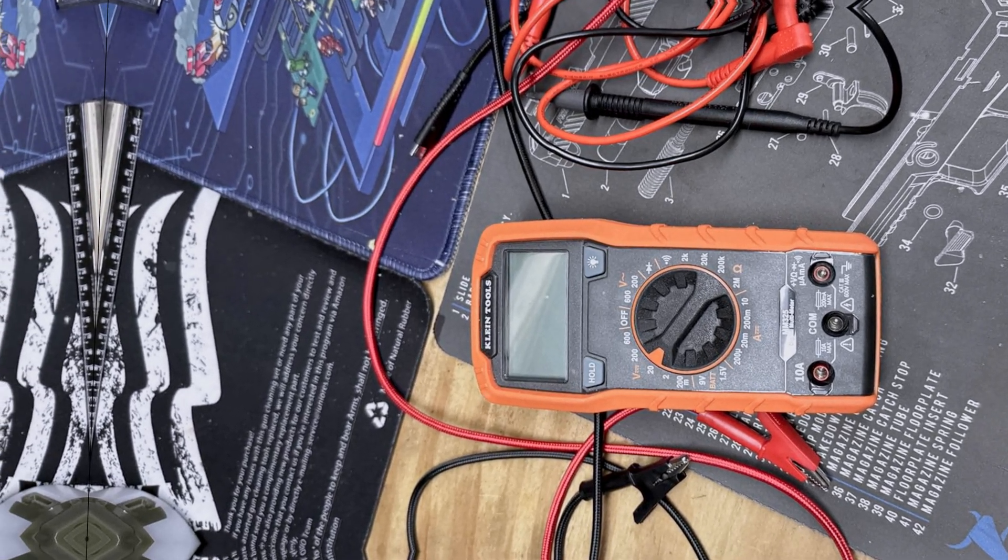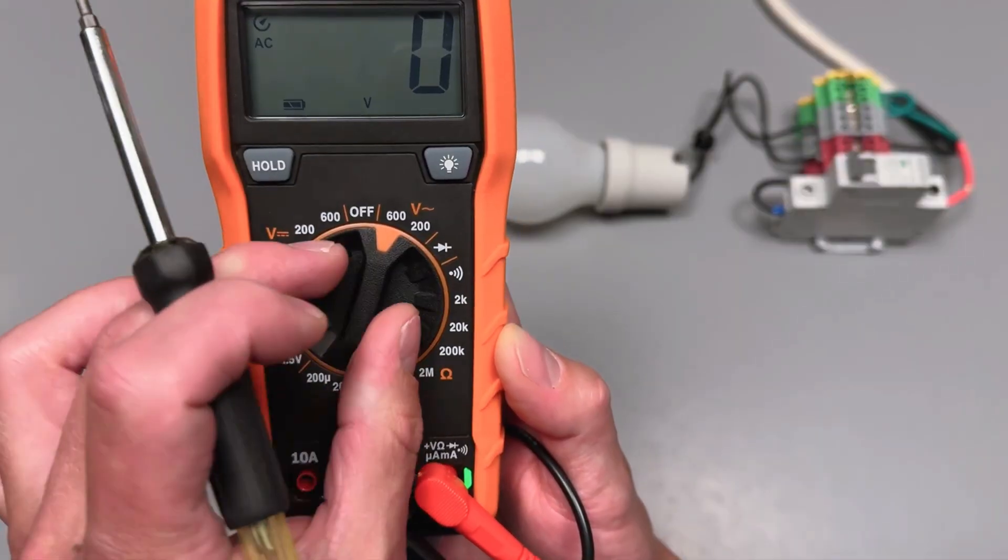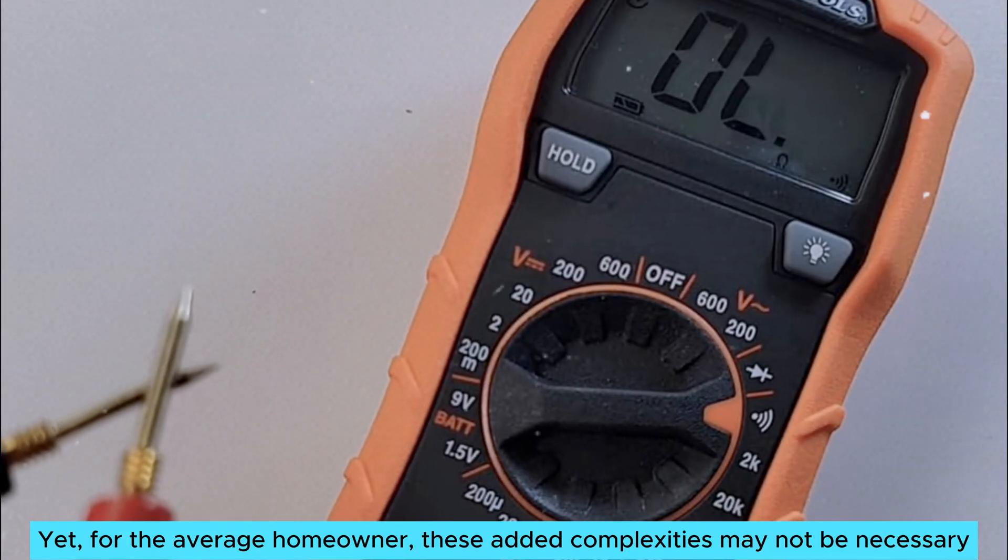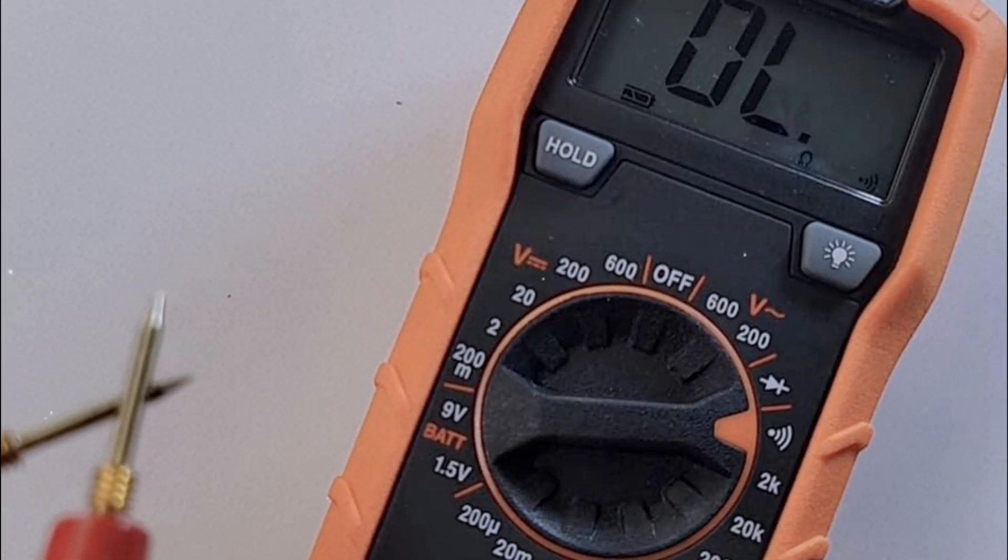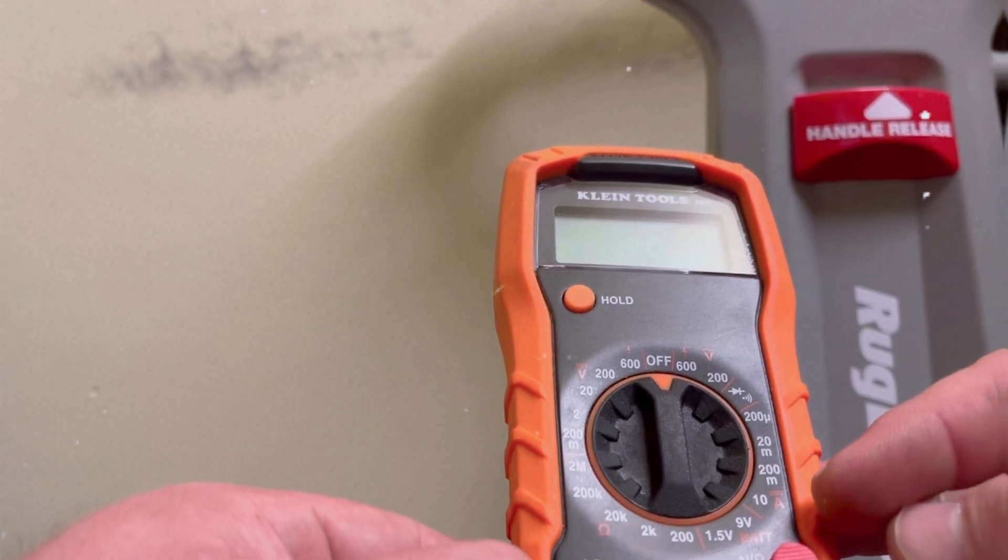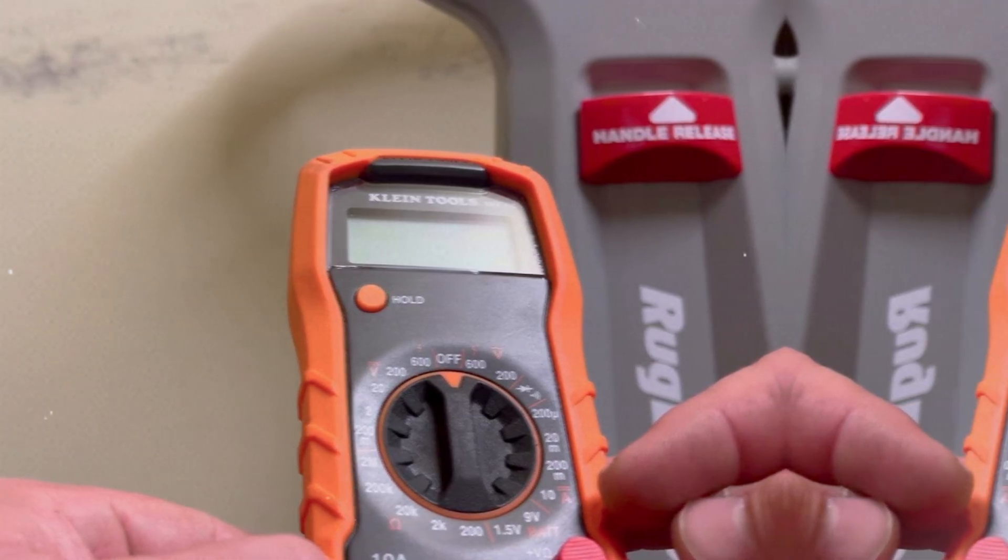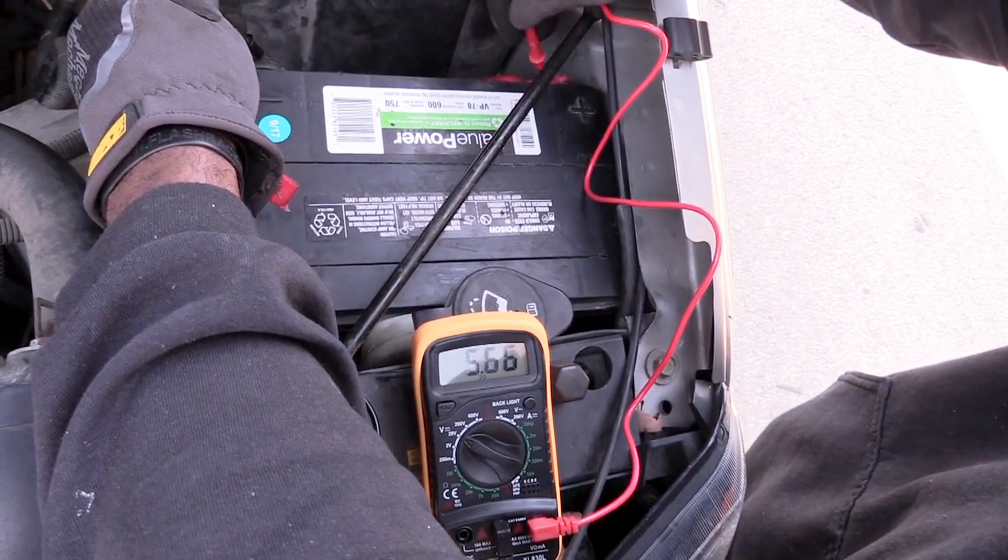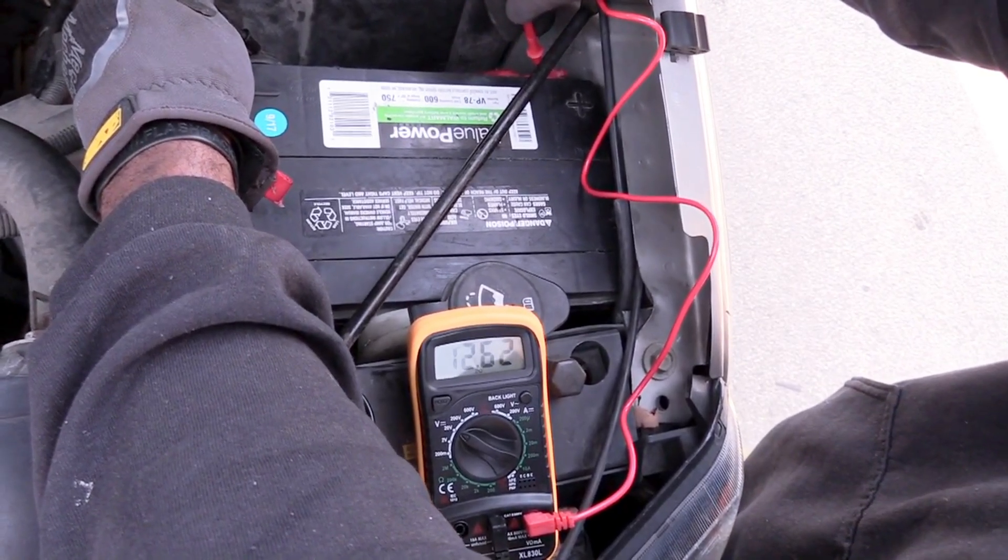However, one minor drawback is the absence of advanced features found in higher-end models. Yet, for the average homeowner, these added complexities may not be necessary. This multimeter proves its worth as a reliable tool for residential tasks. I wholeheartedly recommend exploring the Klein Tools MM325 Multimeter for an impressive blend of performance and ease.